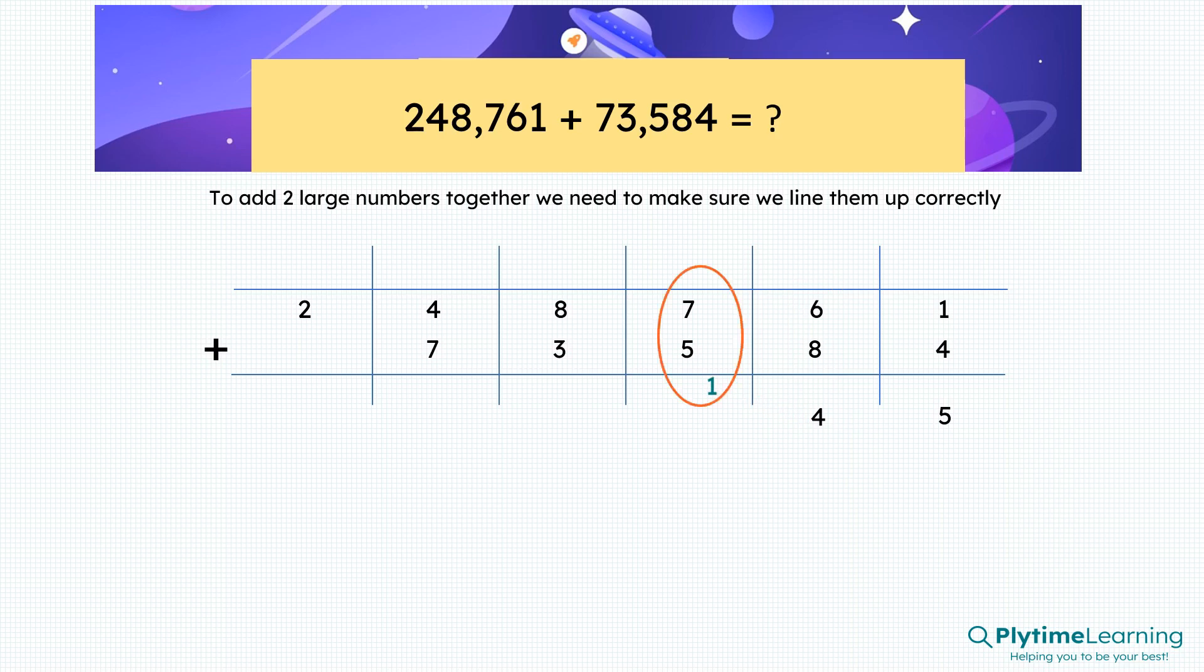Now we have seven plus five plus the one carried forward. It's a total of thirteen. We write the three and then we carry the one forward into the next column.